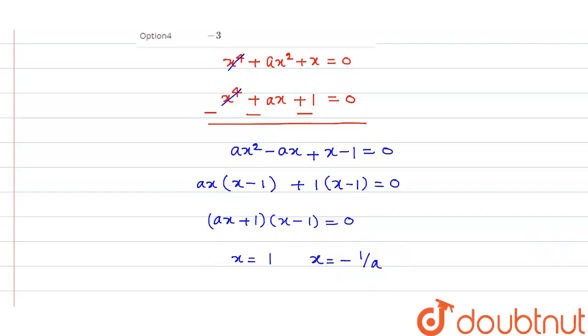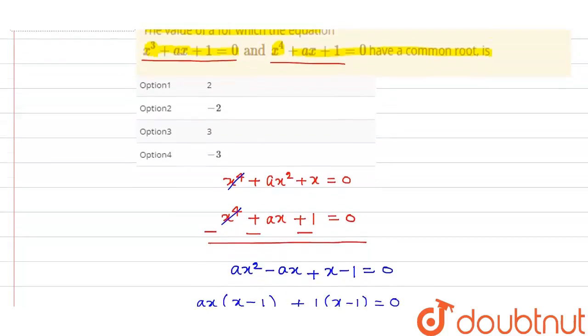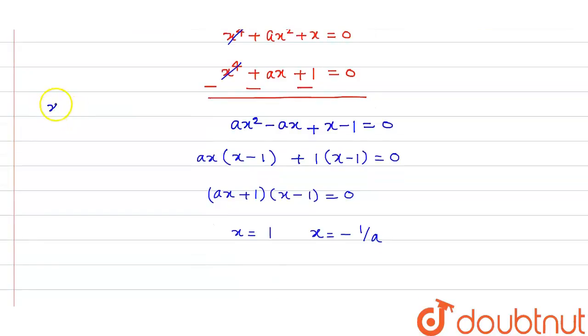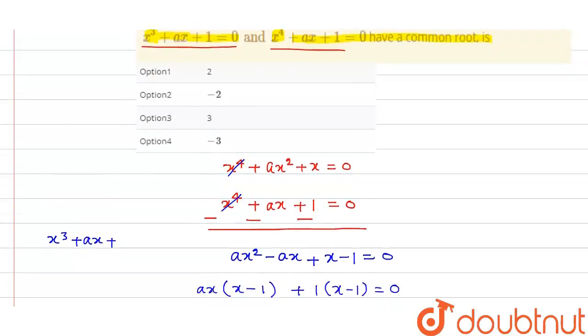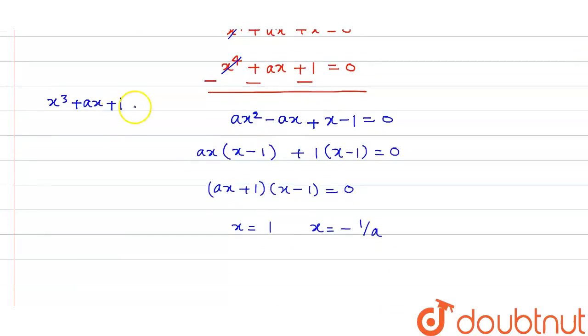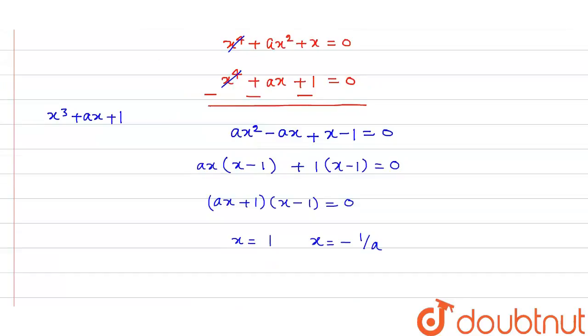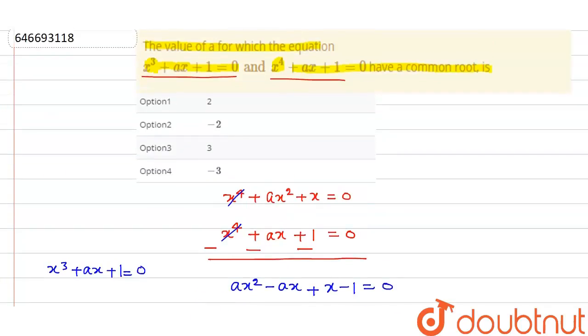Now, what you do is you have equation that is x cube plus ax plus 1 and you need to find x is equal to 0. Now, you need to find the value of a for which this equation has a common root.